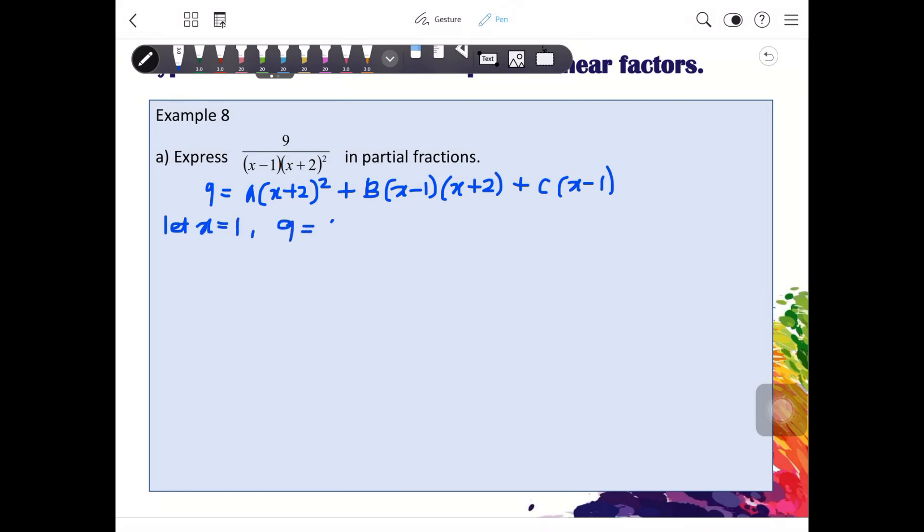I will get 9 equals to A, 1 plus 2 squared. And the good thing is, here, 1 minus 1 will be 0. And also here, 1 minus 1 will be 0. So, I will only focus on finding A right now. Now, 9 is equal to 9A, A is equal to 1.